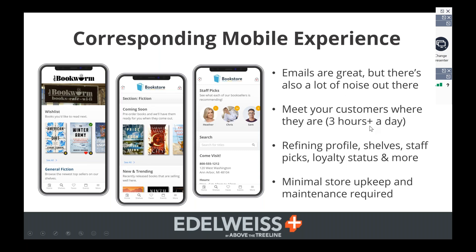One stat I think is fascinating is that the average U.S. adult spends three and a half hours a day on their phone. Whether it's a mobile web page or a native app, being able to have a nice interface where people can go and see things like your general fiction section, their purchases, or where they are on their loyalty account — how many more purchases they need to make to get their reward — we're building those kinds of things in there. We talked about refining profiles, adding shelves, some of the things that are in Edelweiss, staff picks, loyalty status.